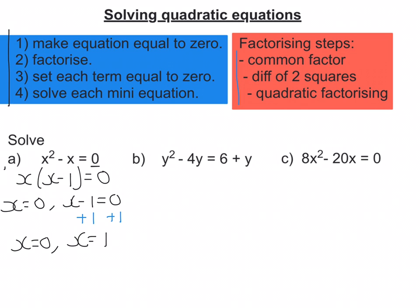So, second one, the one with the y's. First thing I've got to make sure is get my equation equal to zero. So I'm going to take away six and take away y from both sides. So on the left-hand side, I've got a y², I've got -4y - y, so that's -5y, and I've got a -6 equal to zero. So that's good.